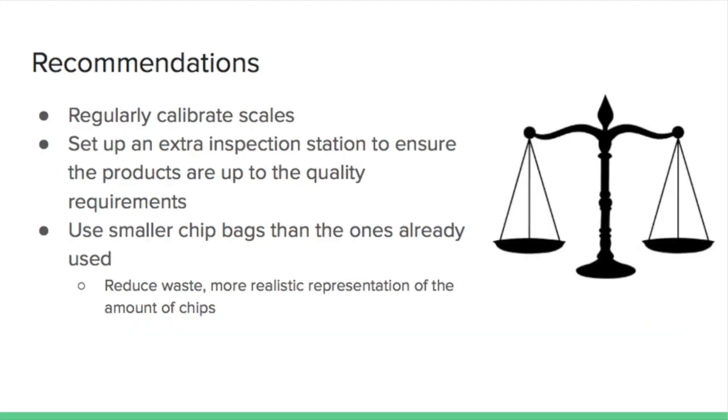So after our multiple methods of analysis, we came up with a couple realistic recommendations for Frito-Lay since it is obvious that their production needs a little help. One of the recommendations we thought was that they should probably regularly calibrate their scales to ensure that they are measuring accurately and putting what they said they are putting into each bag. The next would be to set up an extra inspection station to ensure the products are up to quality requirements.